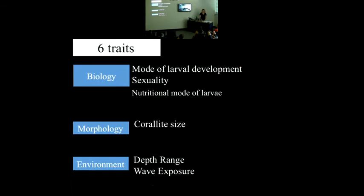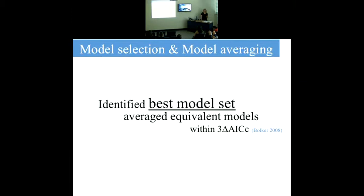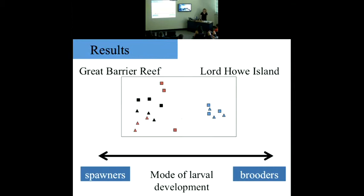I generated multiple models and identified the best ones using AIC, then averaged the best models that were considered equivalent based on very small differences in AIC values. Interestingly, the only predictor consistently selected by the best models was mode of larval development. None of the other traits in the model had a clear relationship with the axis score. As we would expect, brooders are more associated with Lord Howe Island and so more capable of crossing this dispersal barrier and becoming abundant.